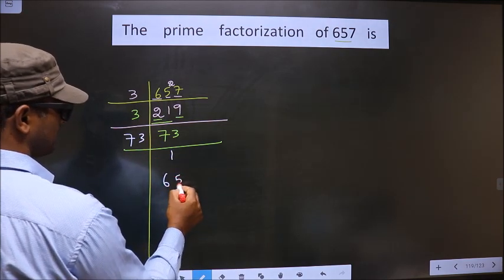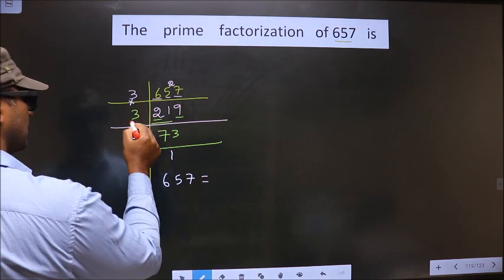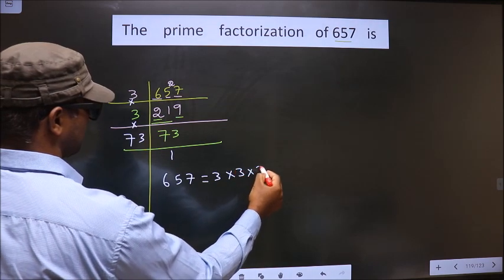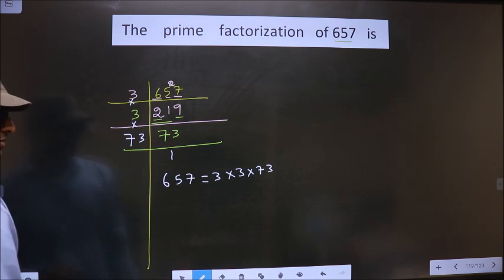So, the prime factorization of 657 is... you put the multiplication symbol between the numbers. That is 3 times 3 times 73. So this is the prime factorization of 657.